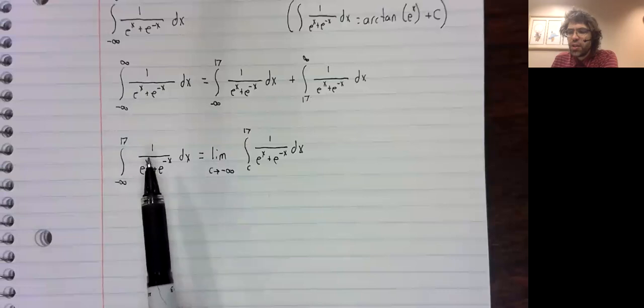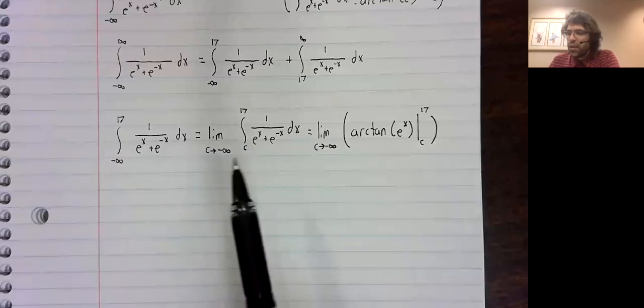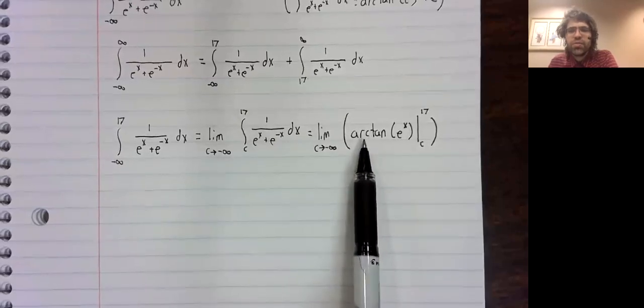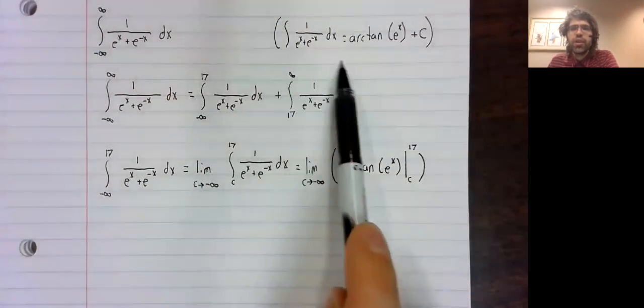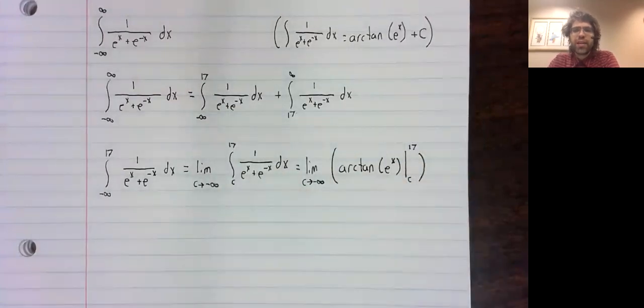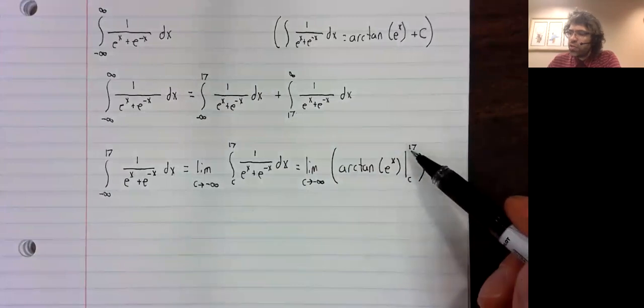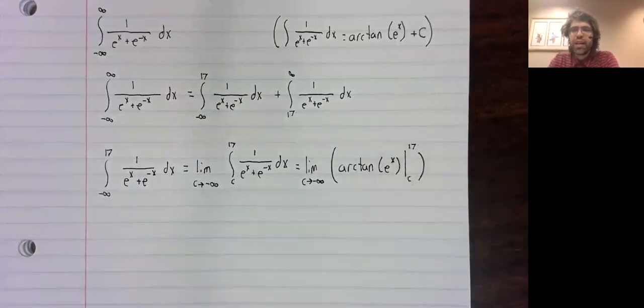Going from here to here is nothing but the definition of an improper integral. And going from here to here is simply the fundamental theorem of calculus using our antiderivative. So we should stick in these limits and subtract them.